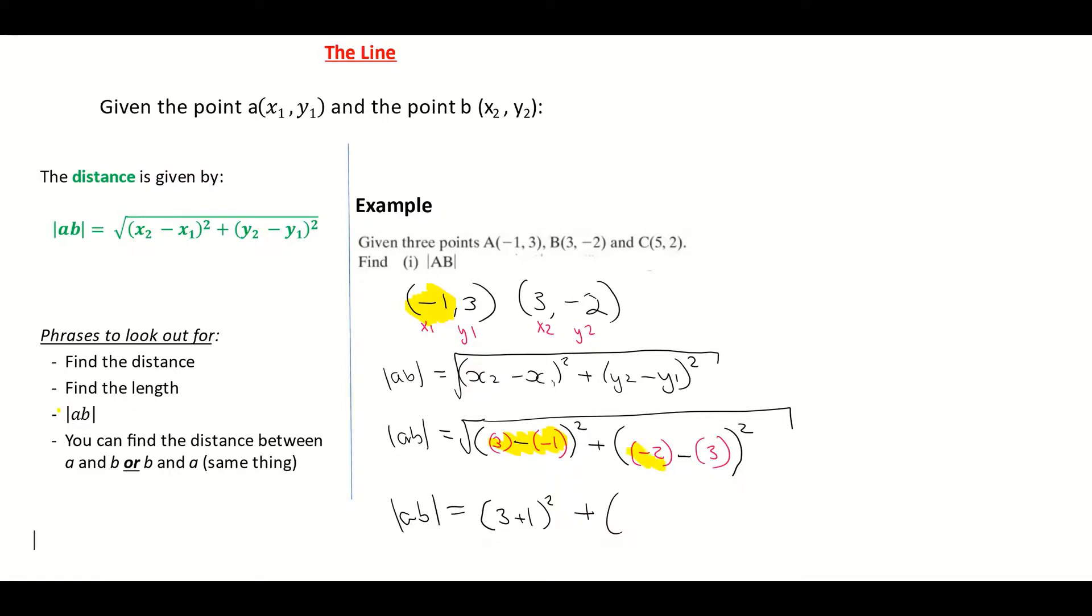Plus -2 minus 3 is giving me, on my number line, -5, all to be squared. And that is all going into my square root.